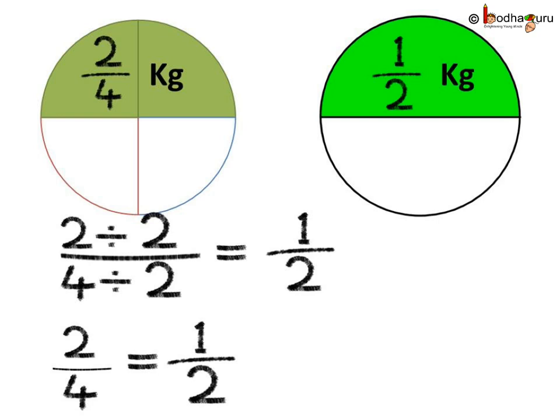So, let us divide two by four by two. In the numerator, two divided by two is one. And in the denominator, four divided by two is two. So, the equivalent fraction of two by four is one by two. So basically, half kg of mangoes are left with Aman.